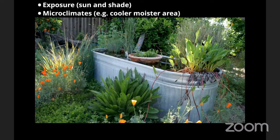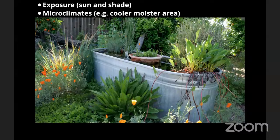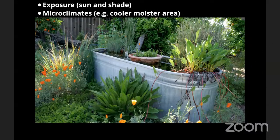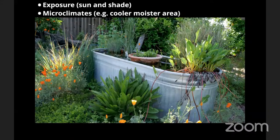Another microclimate to think about using creatively is if you have a cooler, moister area. This is an example of the water feature in me and my partner's backyard — just an old galvanized horse trough that someone was happy to give us, filled it up, put a cheap fountain pump in it with an extension cord, and we have some native water plants in it. There's a little bit of splash onto the north side of this water feature, and there's a large shrub pruned up into a small tree next to it — so it's a shady, slightly moister area where we can grow some native plants that aren't going to thrive out in the main landscape and do really well year-round in this moister microclimate.